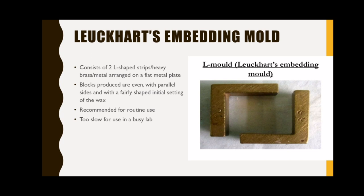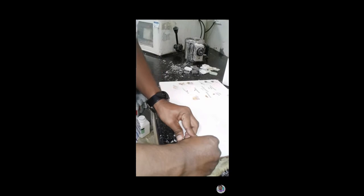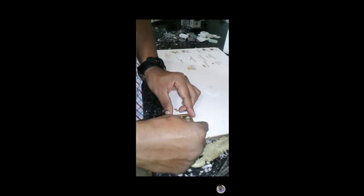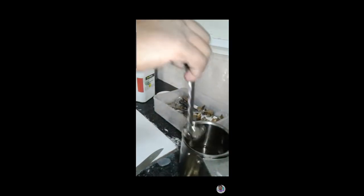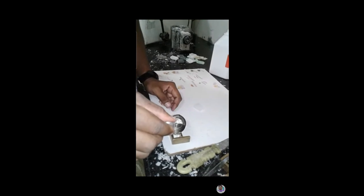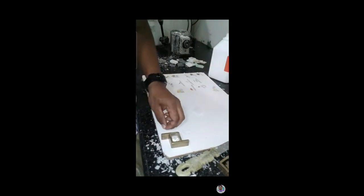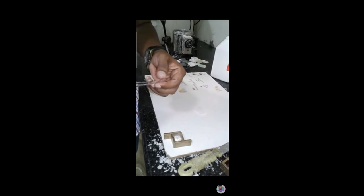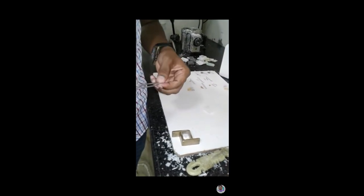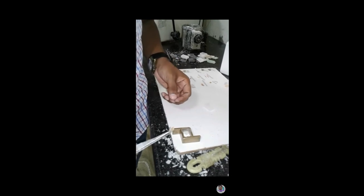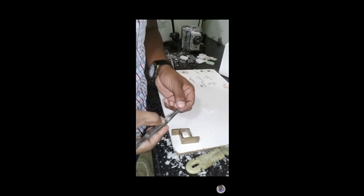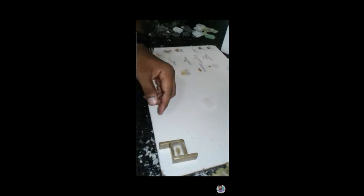The LeCartes embedding mold consists of two L-shaped strips of heavy brass or metal arranged on a flat metal plate, which can be moved to adjust the size of the mold to the size of the specimen. Blocks produced are even, with parallel sides, and with fairly shaped initial setting of the wax. The mold is adjustable to give a wide variety of sizes to fit the size of the tissue block for casting. It is recommended for routine use, although too slow and cumbersome for use in a busy laboratory.